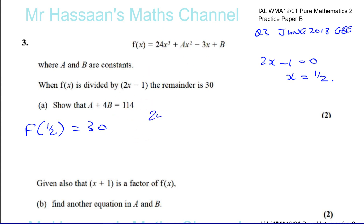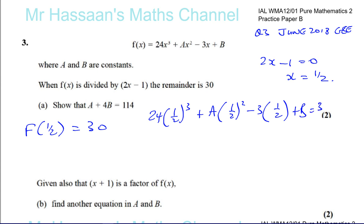So we compute: 24 × (1/2)³ + a × (1/2)² − 3 × (1/2) + b = 30. That gives us: 24 × 1/8 = 3, plus a/4, minus 3/2, plus b = 30. So we have 3 + a/4 − 3/2 + b = 30.